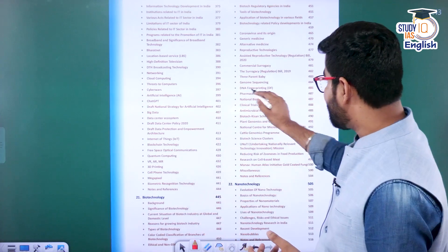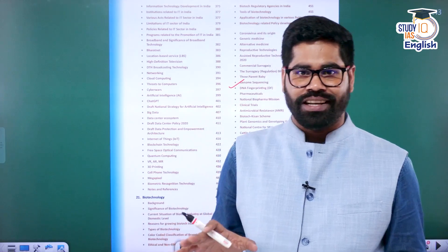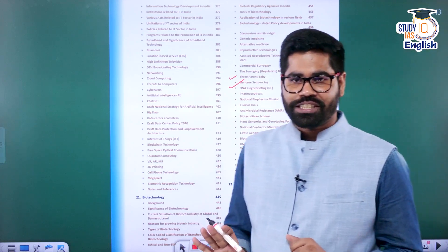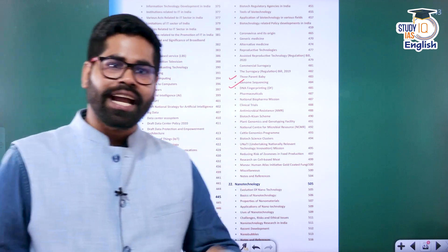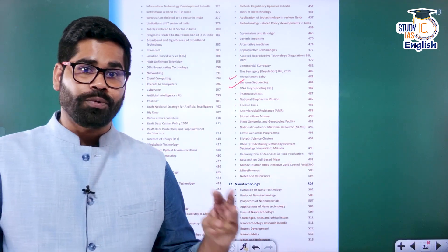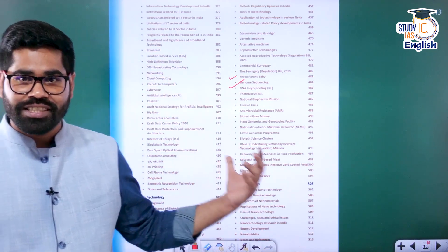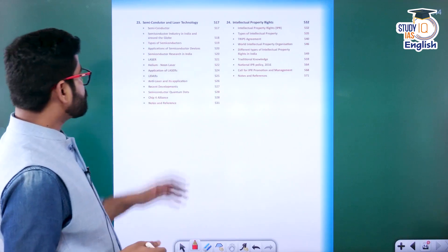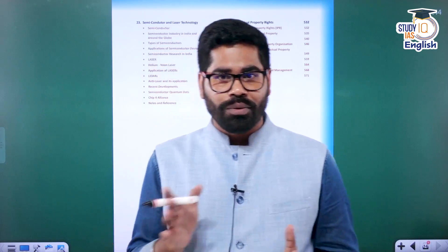We will talk about recent things like genome sequencing and the three-parent baby, which has been quite controversial. Then after, we will talk about nanotechnology. They have been asking many questions from the nanotech sector, along with biotech and information tech — these three sectors have been quite important. So we will discuss what has been the uses of nanotechnology, what are the challenges, and what can be the way forward. Then after, we will also talk about the semiconductor sector, which is one of the emerging sectors.